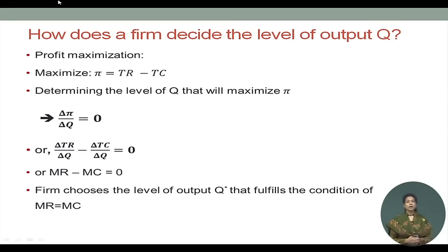Marginal revenue equal to marginal cost is the profit-maximizing condition for any firm. It means the additional revenue the firm expects to receive from selling the last unit of output should equal the cost of producing that additional unit of output. For a perfectly competitive firm, let us look at this graphically and see how output is determined.